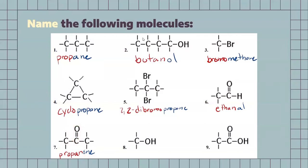Our next one is kind of an easy one. We have a single carbon, so we know it's going to be a type of methane. But since we have our OH group there, we know that it's going to have to be methanol.